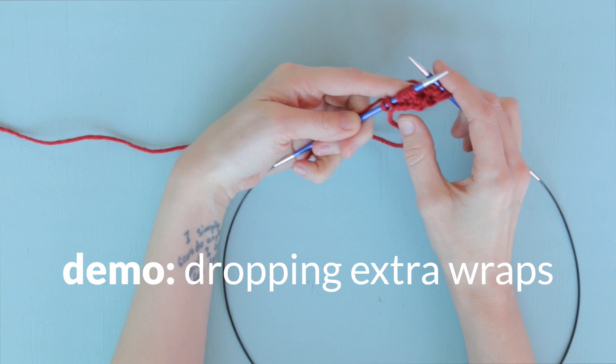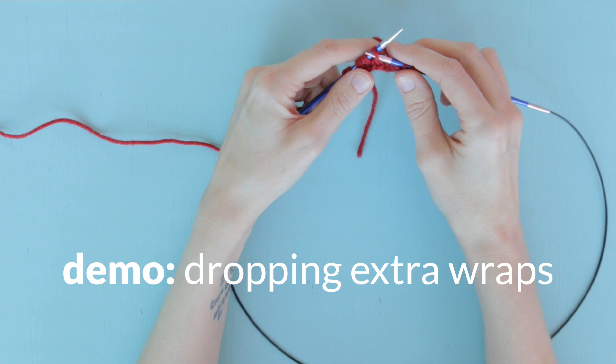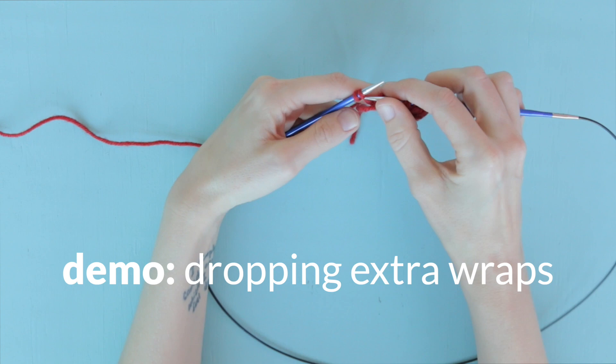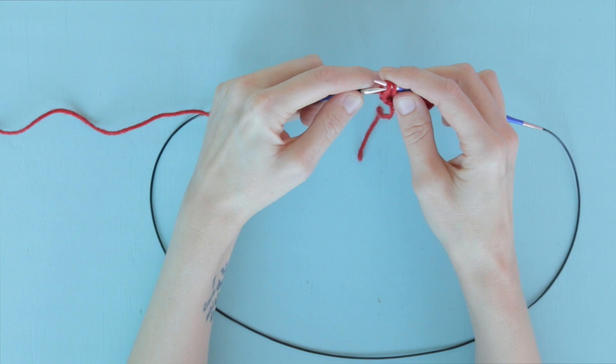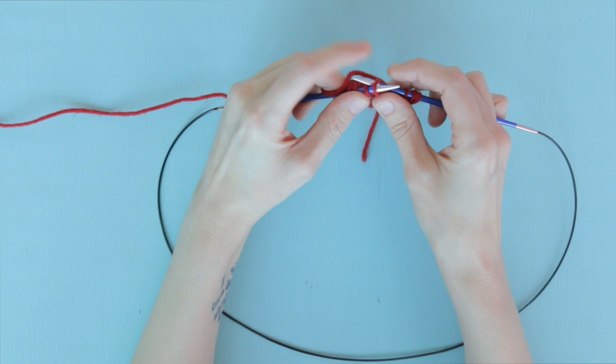So slip one and drop, two and drop, three and drop, four and drop, and slip all of those long loops back to the left hand needle. It's really important not to twist these loops by the way, otherwise the stitch won't turn out quite so beautifully.